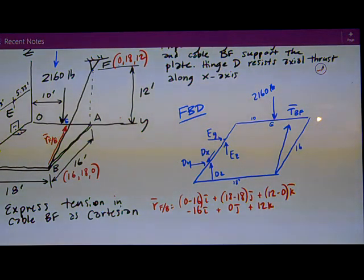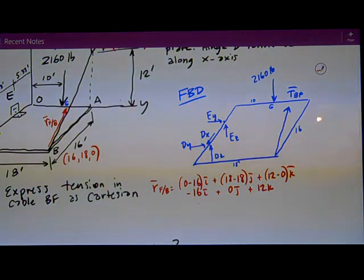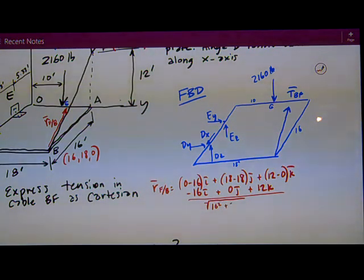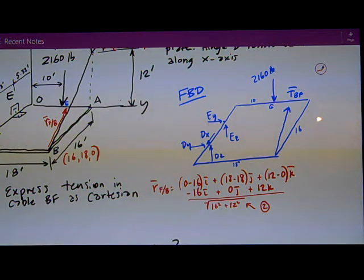Divide by the magnitude of the sum of the squares, which is 16 squared and 12 squared, which works out to be 20. And what I really have is a 3, 4, 5, it's not 2, it's 20.